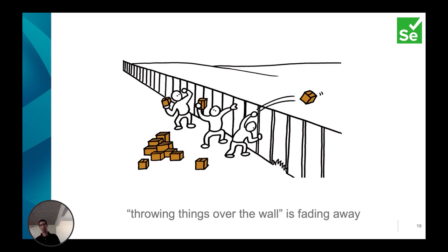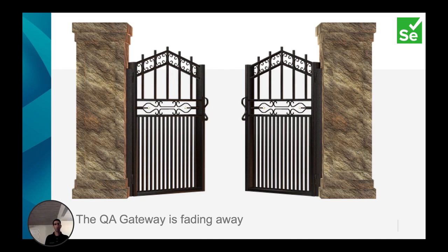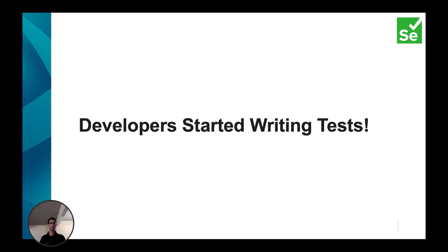There used to be a very clear separation between testing and development — different teams, different responsibilities, different leaders. This is pretty much going away. Now testing is done as part of the development team by developers or test engineers embedded within it. There is no more throwing things over the wall — 'It worked on my machine.' There is no more the notion of a QA gateway where only when QA declares it approved can it go out. Now releases can go to production at any point. As part of that, developers started writing tests, sometimes solely, and in other cases test engineers are involved as well.